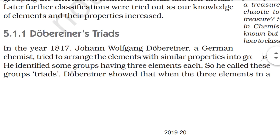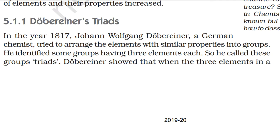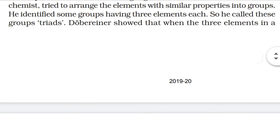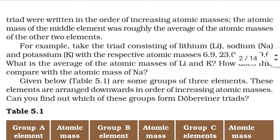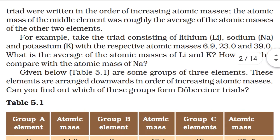Dobereiner's Triads: In the year 1817, John Wolfgang Dobereiner, a German chemist, tried to arrange the elements with similar properties into groups. He identified some groups having three elements each, so he called these groups triads. Dobereiner showed that when the three elements in a triad were written in the order of increasing atomic masses, the atomic mass of the middle element was roughly the average of the atomic masses of the other two elements.